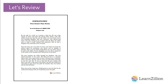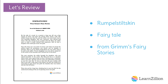We've been reading the fairy tale Rumpelstiltskin. This story is from a group of fairy tales collected by two brothers, Jacob and Wilhelm Grimm, around the year 1820. Rumpelstiltskin tells the story of a miller's daughter who is given the impossible task of spinning a pile of straw into gold. A little man comes along to help her with the task.